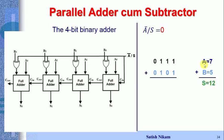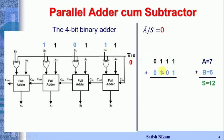A is written as 0111 and B is written as 0101. We apply /S = 0 and connect the bits: A0=1, B0=1; A1=1, B1=0; A2=1, B2=1; A3=0, B3=0. We then perform the bit-by-bit addition through the circuit.